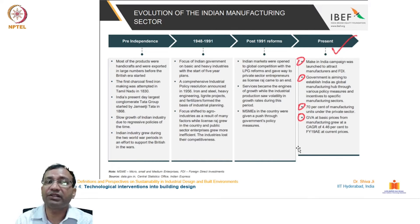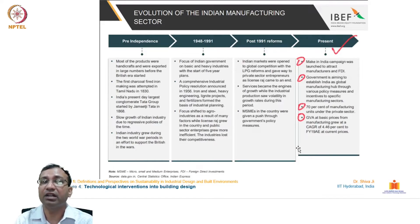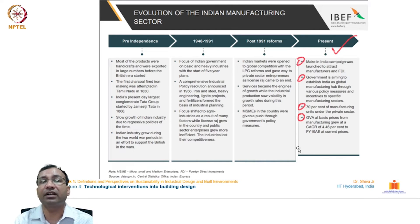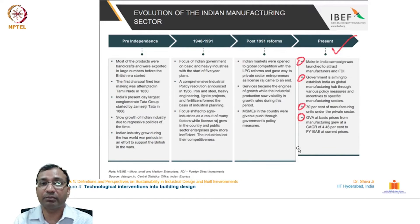The government is aiming to establish India as a global manufacturing hub through various policy measures and incentives to specific manufacturing sectors. The software and IT industry has emerged as one of the prime industries where India has attained huge capacity and power, providing services to most countries across the world.